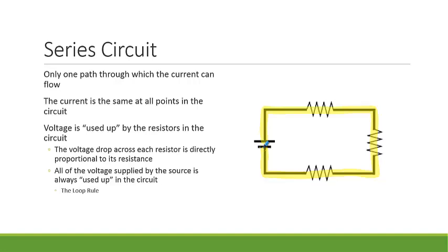The most important thing to know about a series circuit is that the current is the same at all points. So the current through the resistors, through the battery, through the wires — it is the same at all points in a series circuit.